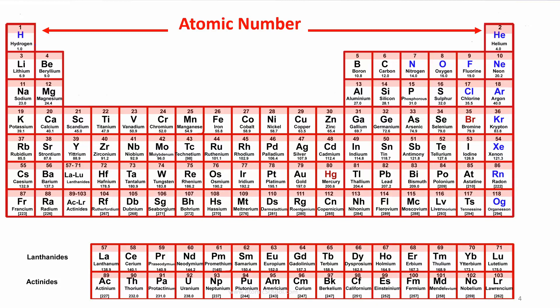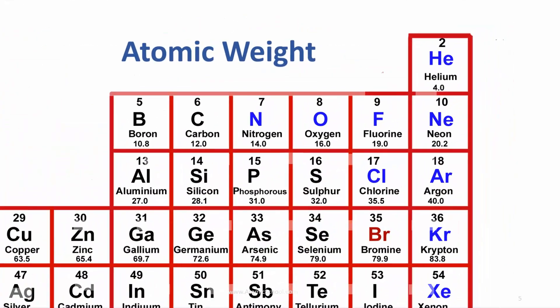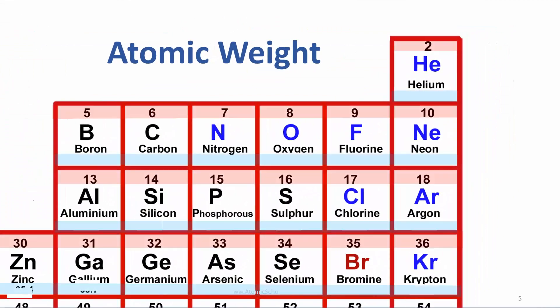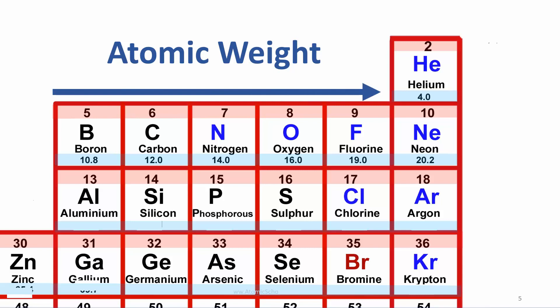Another number called the atomic weight is often shown at the bottom of each square. This lesson explains what atomic weight means and how it's different from the atomic number.